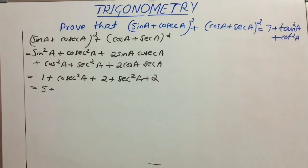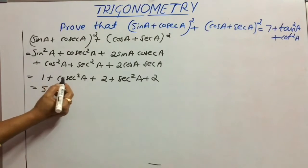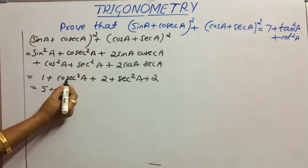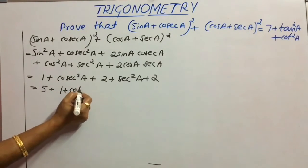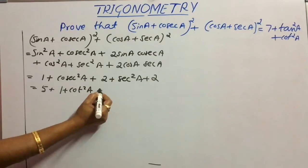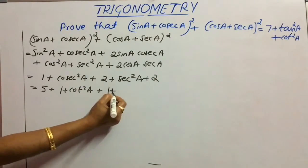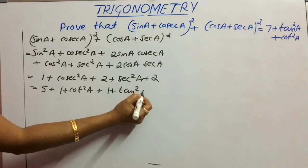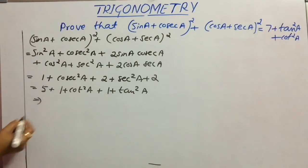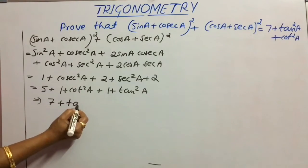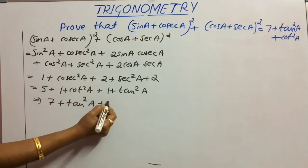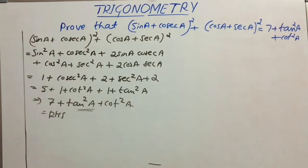We need the answer in terms of tan and cot. So cosec²A can be written using the identity cosec²A = 1 + cot²A, and sec²A = 1 + tan²A. Simplifying: 5 + 1 + 1 + tan²A + cot²A = 7 + tan²A + cot²A, which equals RHS.